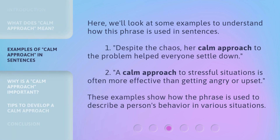Here, we'll look at some examples to understand how this phrase is used in sentences. 1. Despite the chaos, her calm approach to the problem helped everyone settle down. 2. A calm approach to stressful situations is often more effective than getting angry or upset. These examples show how the phrase is used to describe a person's behavior in various situations.